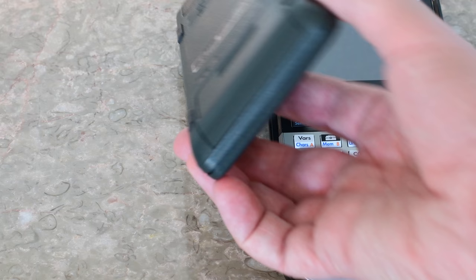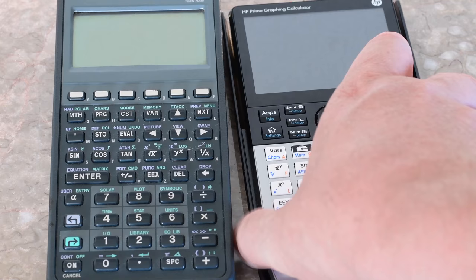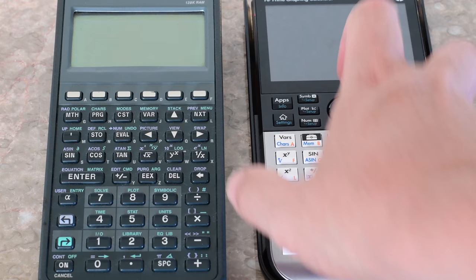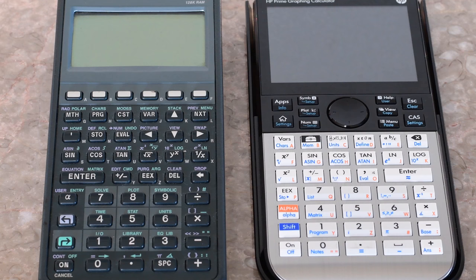As far as physical dimensions, the old 48 is a little bit thicker compared to the new Prime, but otherwise about the same general size. The Prime is maybe a half inch wider.